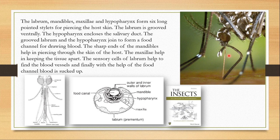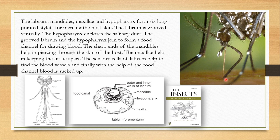You can see the blood getting sucked up. The labrum, which normally encloses all six stylets, is left behind when the stylets are inserted into animal tissue. This kind of piercing and sucking mouthpart helps mosquitoes get blood from animal tissue. There are two types of piercing and sucking mouthparts: one found in hemipterans feeding on plant sap, and the other in dipterans like mosquitoes which draw blood from animals.